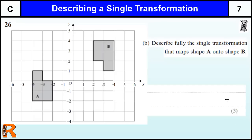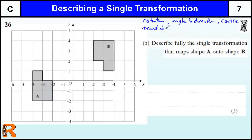If it's three marks it's probably a rotation, because a rotation requires three things: you need to say it's a rotation, you need to say the angle and direction — clockwise or anticlockwise (if it's 180 degrees you don't need direction) — and then the centre of rotation. One mark for each. If it was a translation you get one mark for the word translation and one mark for the vector — how far across or up or down. If it's a reflection you get one mark for the word reflection and one mark for the line of reflection, such as the Y axis or X equals zero. Translations and reflections are worth two marks; rotations are worth three marks.